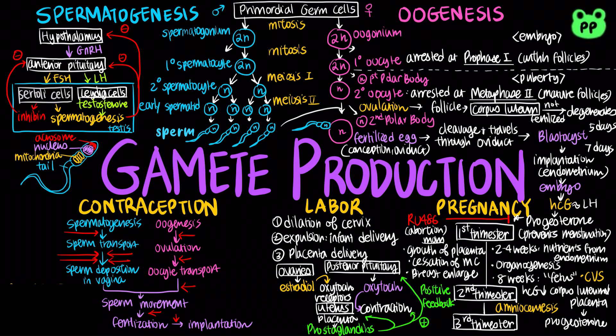Contraception is the deliberate prevention of pregnancy and can be achieved in a number of ways. Female hormonal contraceptives often involve synthetic estrogen and progestin, which mimic the negative feedback in the ovarian cycle, lowering luteinizing hormone and blocking ovulation. Tubal ligation involves sealing shut or tying off a section of each oviduct to prevent eggs from traveling into the uterus.